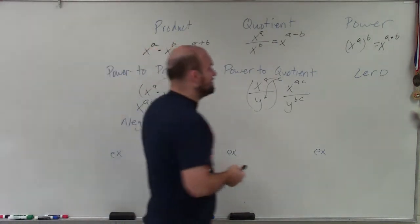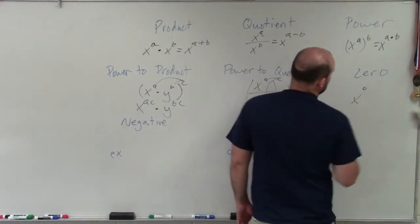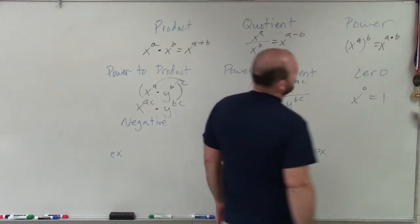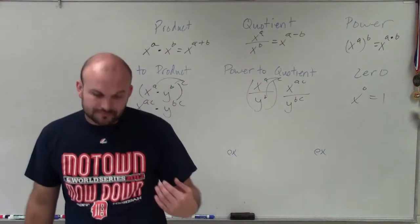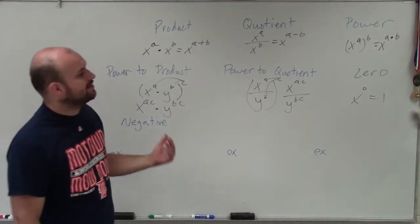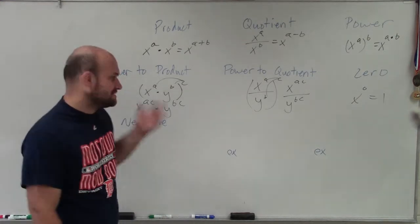The zero power rule pretty much states that whenever I have an exponent and I raise it to the zero power, no matter what the base is, it's always going to equal 1.